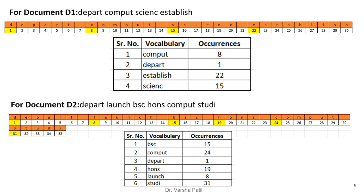Now we will take each document one by one to make an inverted file index. Document D1 is: depart, compute, science, establish. We are using byte offset here. The first word occurs at location 1, the second word at location 8, 'science' at location 15, and 'establish' at location 22. We find out these locations and maintain the data with vocabulary and their occurrences.